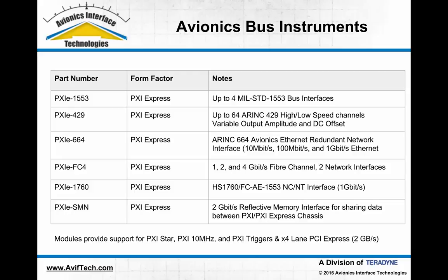There is also a PXI Express ARINC 429 card that can provide up to 64 ARINC 429 channels in a single slot — up to 32 transmitters and up to 32 inputs. On each output, the module supports software-programmable amplitude of the output signal and the ability to add a DC offset to the output ARINC 429 signal.